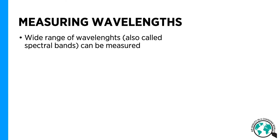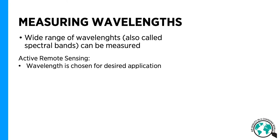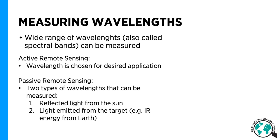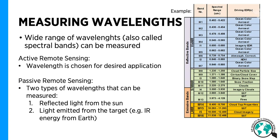So how do we measure wavelengths? There's a wide range of wavelengths, also called spectral bands, that can be measured. In the case of active remote sensing, you can just choose the desired application. For passive remote sensing, we can measure light reflected from the sun, or we can measure light emitted from the target. Here's just one example of one satellite that measures 22 different bands.